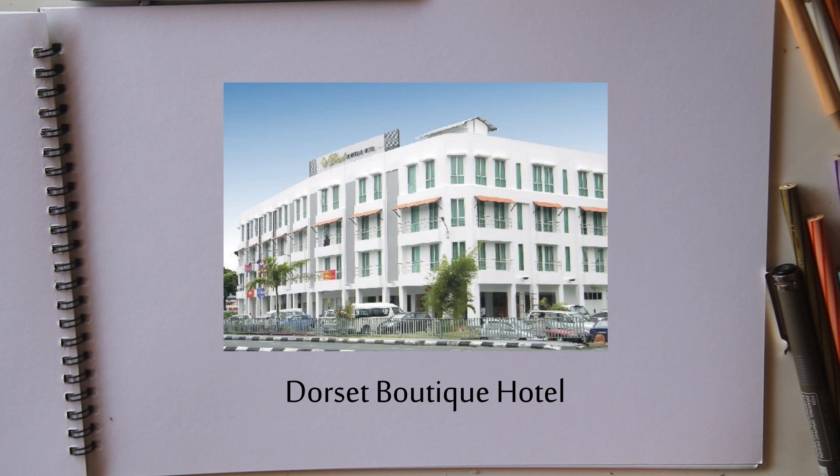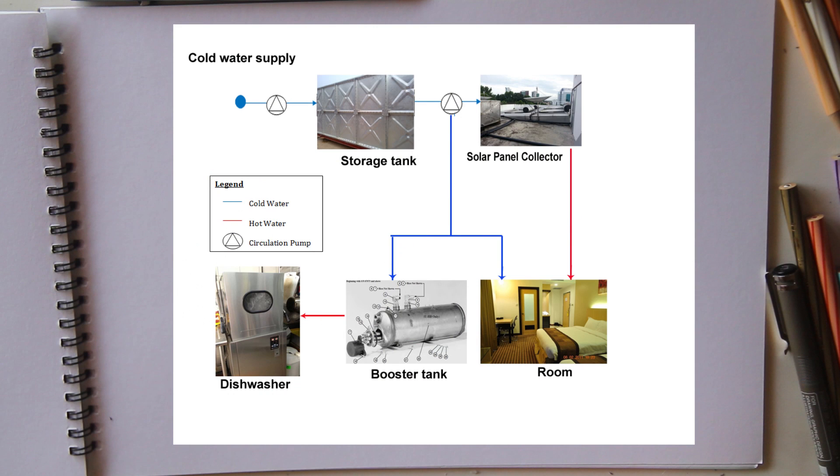And this is hot water supply system for the local hotel, Josette Frontec Hotel. It's not as complicated as the Overseas Hotel. The water from the main supply is pumped to the water storage tank followed by the solar panel collectors for heating up. The heated water will be discharged to rooms after being heated.